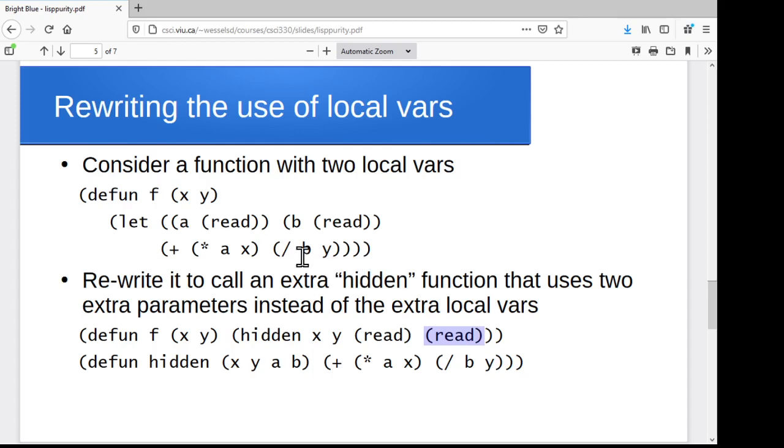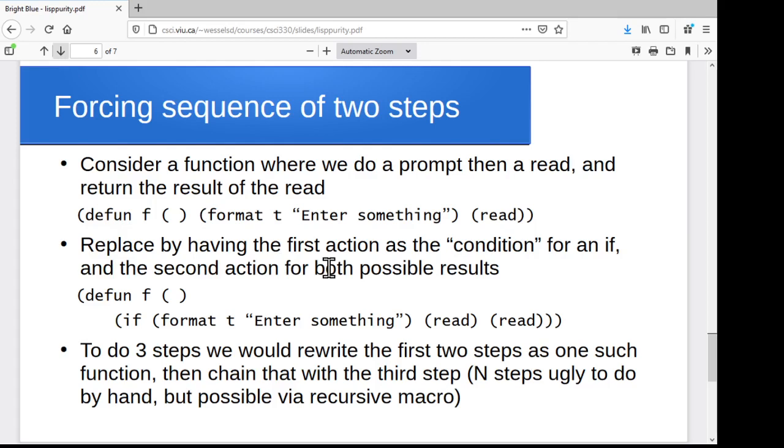And the way we get the initial values into those parameters is to pass the functions that the original version used to set them. So originally we said set a to read and b to the result of a read. So now our function f just calls this hidden function, passing the original x, the original y, and the two calls to read. So now f is functionally pure and our hidden function is functionally pure. We've just got this hidden layer of abstraction, this hidden extra function call taking place. So we can get rid of this sort of local variables using a rewrite.